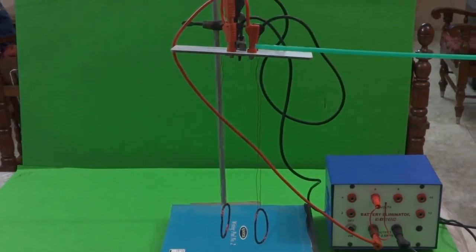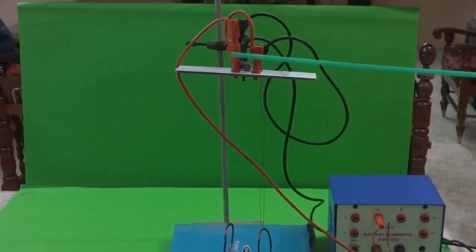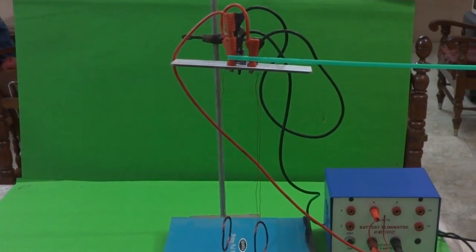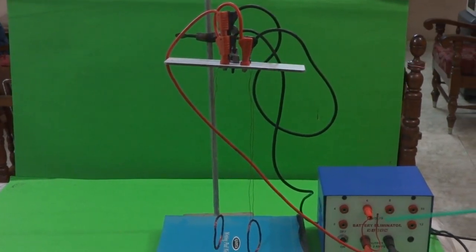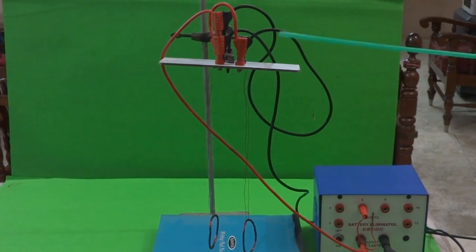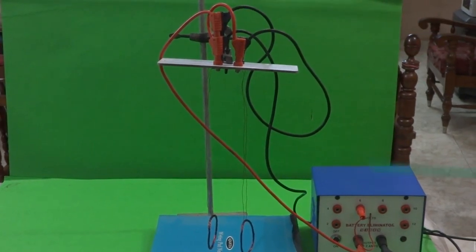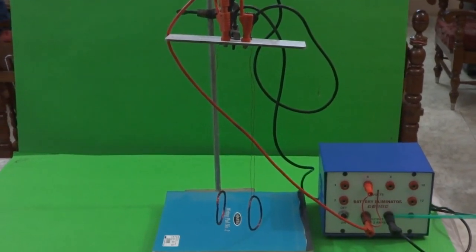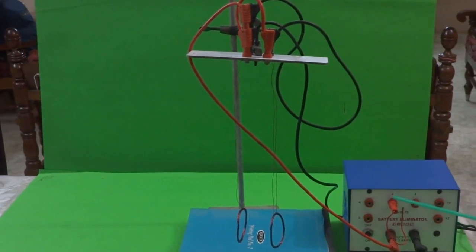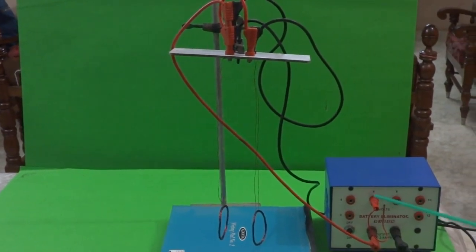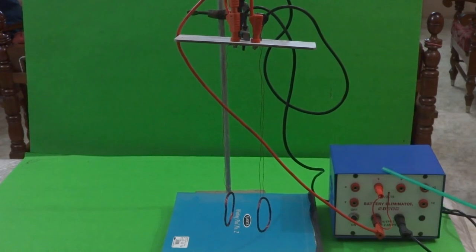I have taken one end of both the coils to positive of the battery eliminator and the other end of the two coils are connected to the negative of the battery eliminator. Here, I am using 6 volts as the potential difference.